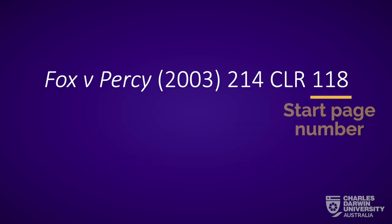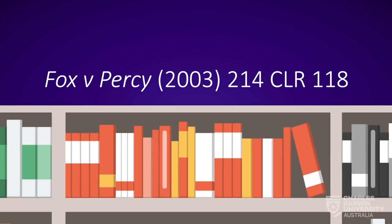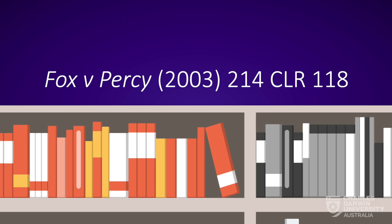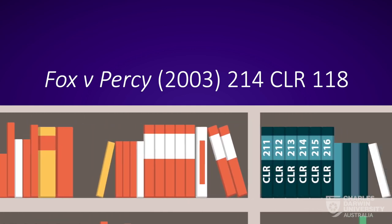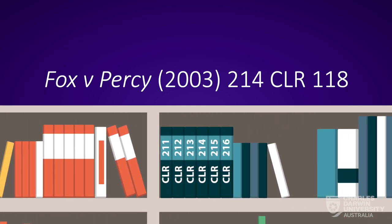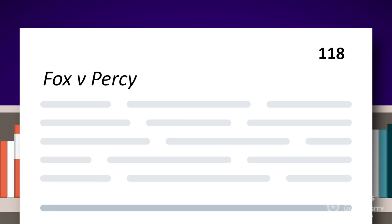Then the page number that the case starts on. The case citation tells us where we can find this case online and in hard copy. We can find the case of Fox and Percy in the Commonwealth Law Reports in volume 214. The case starts on page 118.